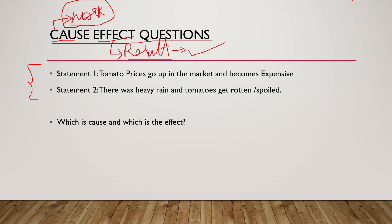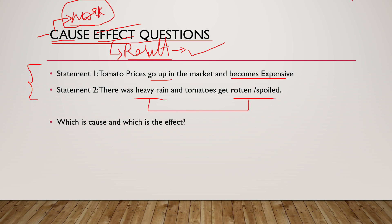Similarly, we have to answer the given question. Statement one is: tomato prices go up in the market and become expensive. Statement two is: there was heavy rain and tomatoes get spoiled or destroyed. So there was heavy rain and the tomatoes were destroyed. By looking at these two statements, you have to say which is the cause and which is the effect. You can deduce that because there was heavy rain and the tomatoes got destroyed, the prices became expensive.